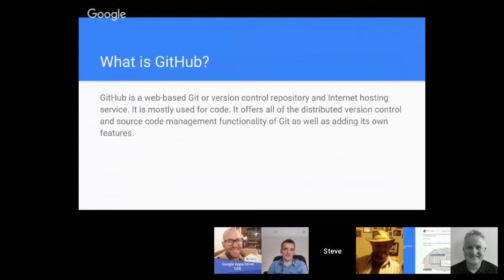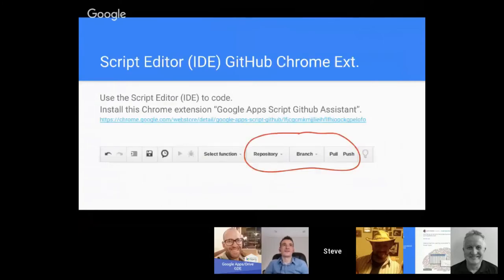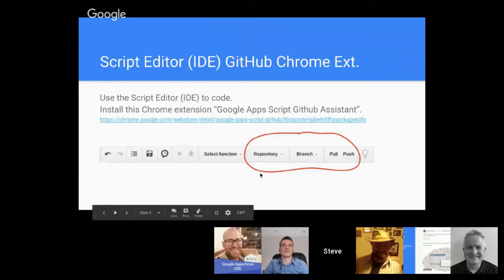What is GitHub? We're going to focus on GitHub's version control repository, which handles things very nicely. It's widely used - in fact I think Google themselves use it. We're going to show you how to interact with the Script IDE with this version control software. Someone has written a very nice Chrome extension called Google Apps Script GitHub Assistant. Once you click the install link it's a quick, easy install, and then when you open up your Google Script Editor IDE it will now have supplemental menu options - to the right of the 'select function' you'll have repository branches and the ability to push or pull.